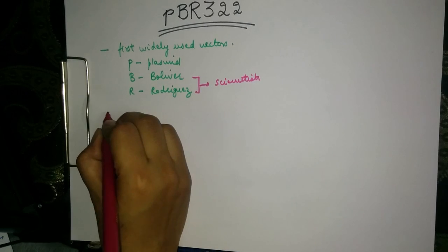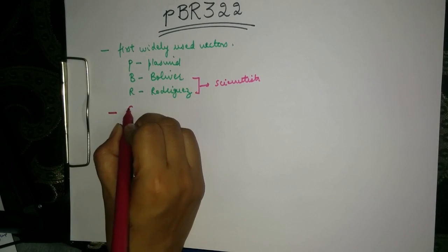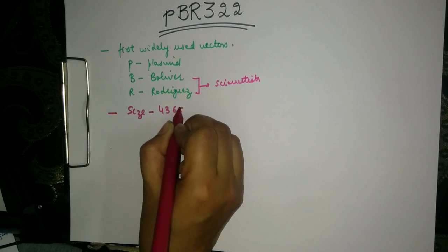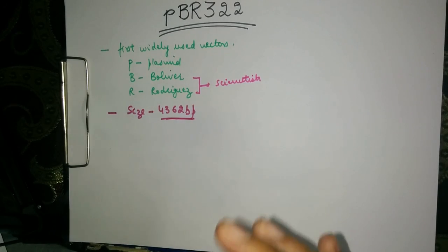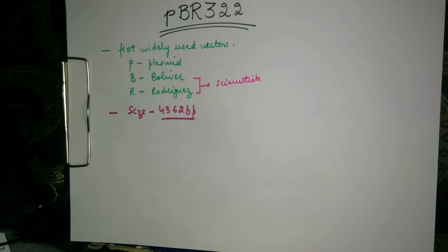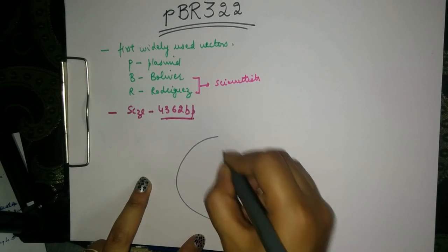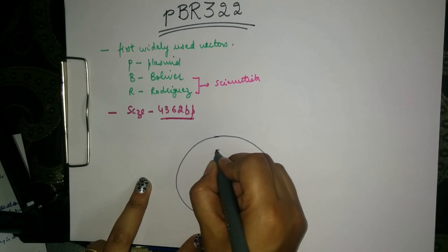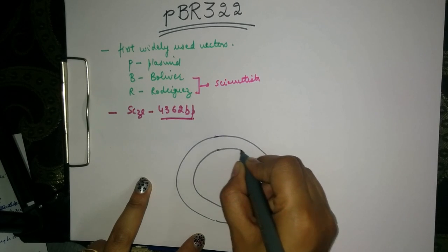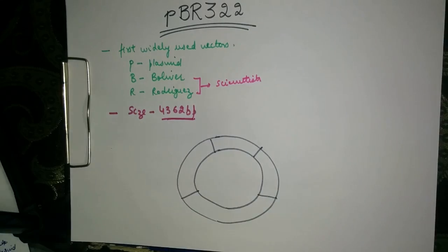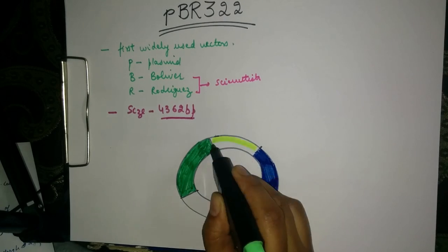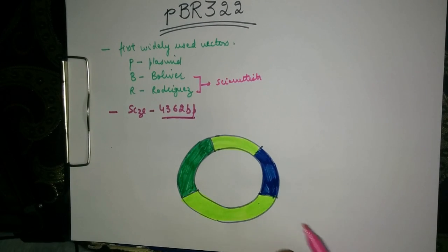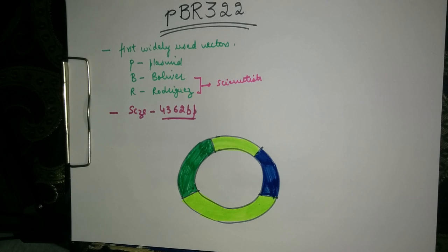The size of this vector is 4362 base pairs and its entire base sequence is known. Now let me illustrate the features of this plasmid through a figure. Let us look at the features of this plasmid in detail one by one.